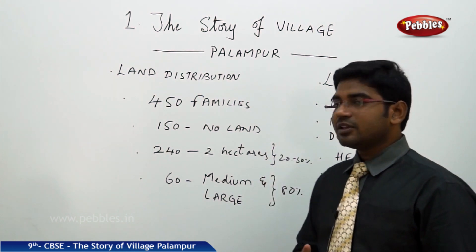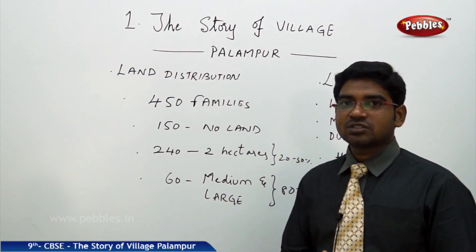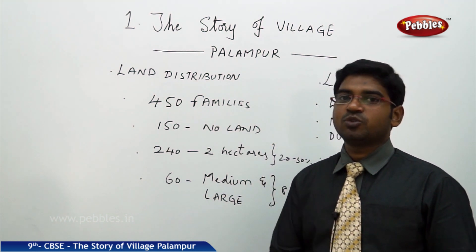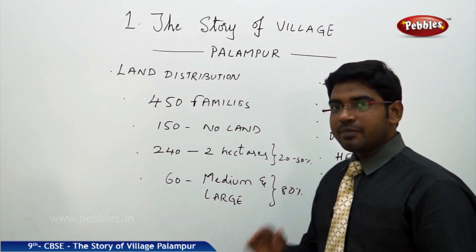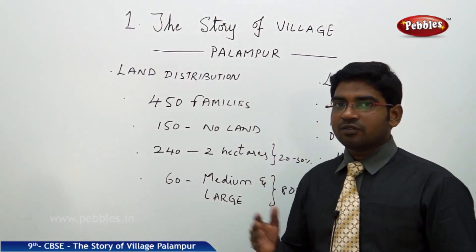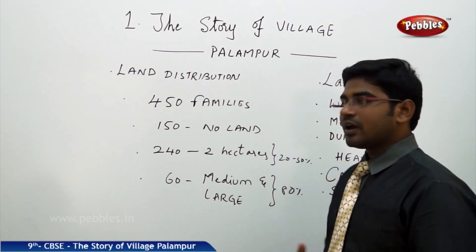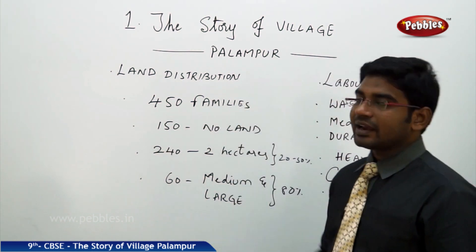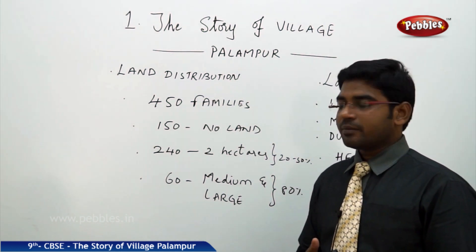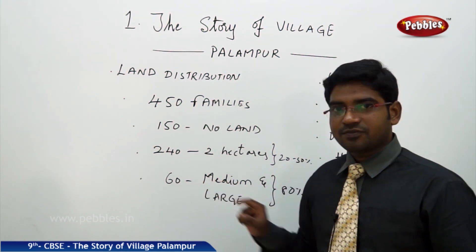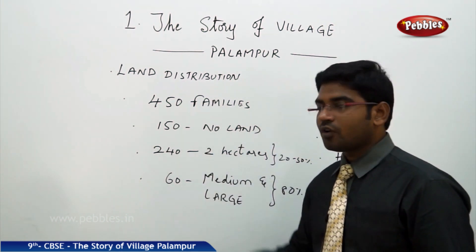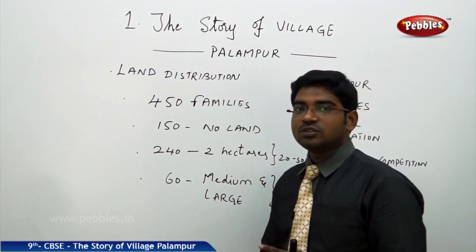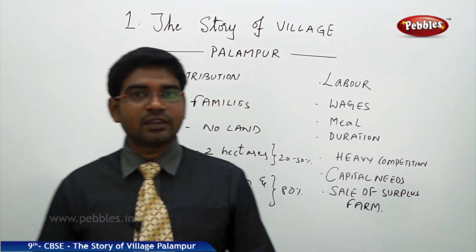The 60 families hold land ranging from 2 acres to more than 10 acres, and these people come under medium and large scale farming families. 80% of the entire land in Palampore village is controlled by these 60 families, whereas 240 families are accommodating only 20% of the land used for agriculture.